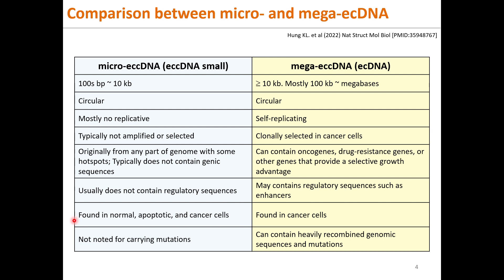On the other hand, mega ECC DNAs can self-replicate, amplify, and grow selected in the cancer cells. They contain oncogenes, drug resistance genes, other genes, or even regulatory sequences such as enhancers, as long as these elements can promote cell proliferation. ECC DNAs are chronically selected and expanded in cancer cells. Additionally, ECC DNAs and the genomes they originated from carry heavily recombined and mutated sequences — that is, the donor genomes are in very poor shape.